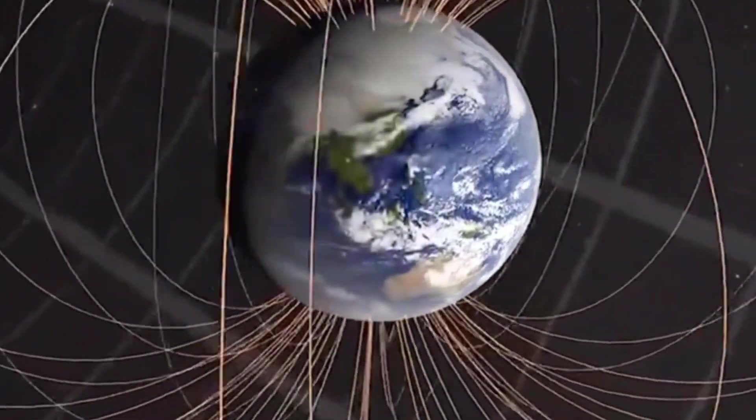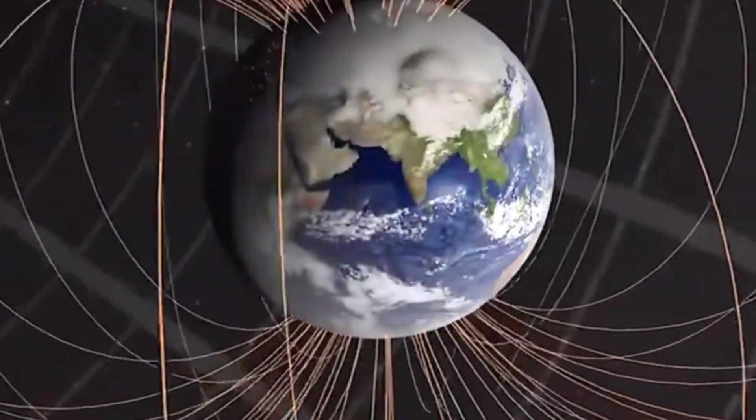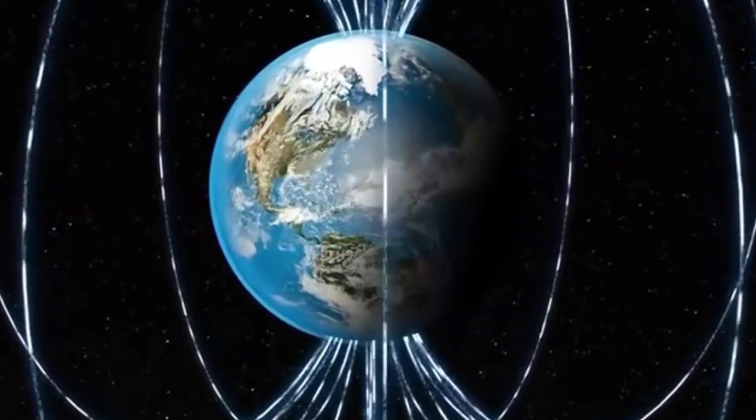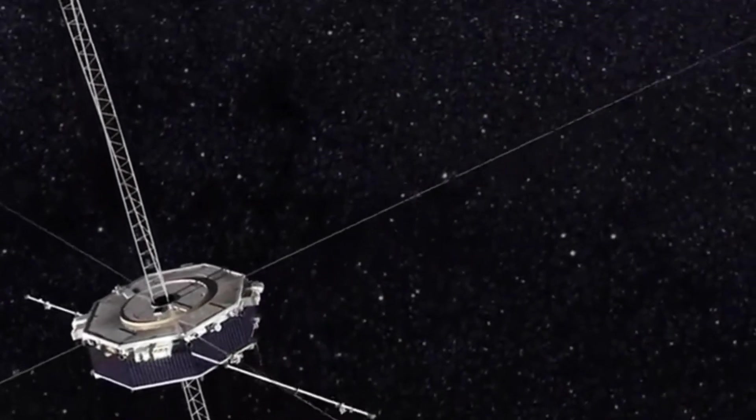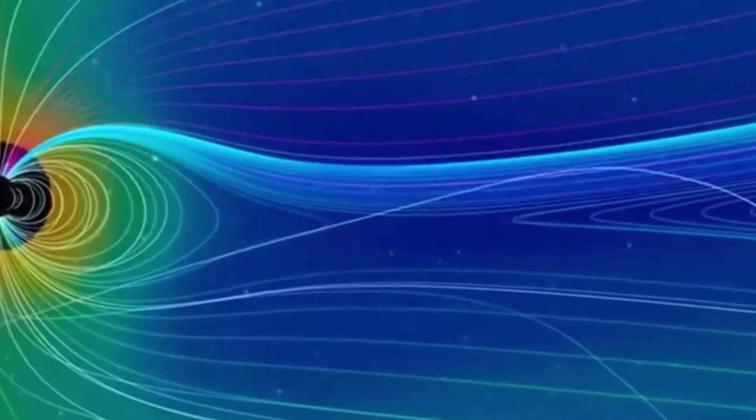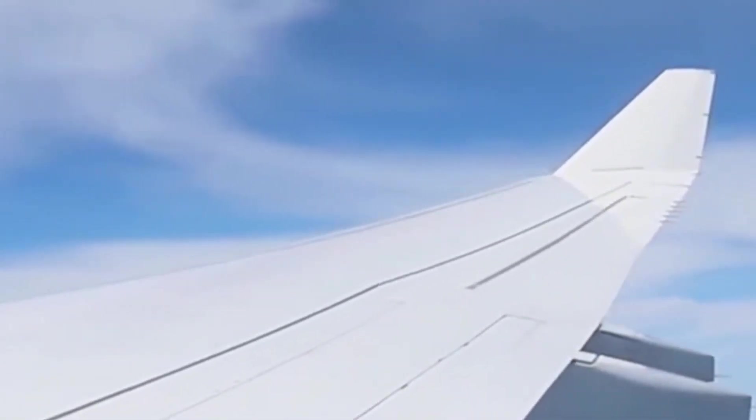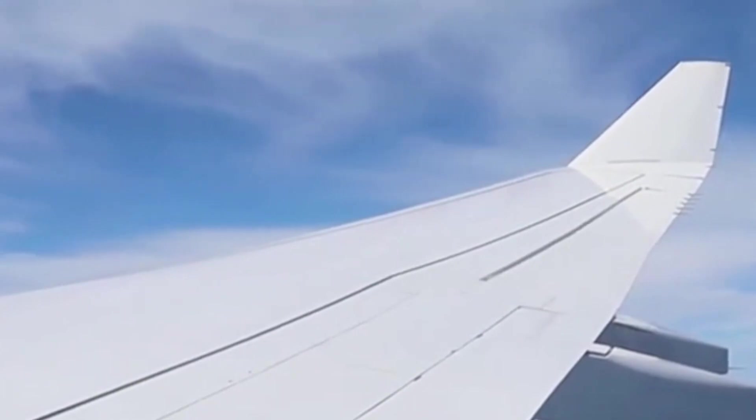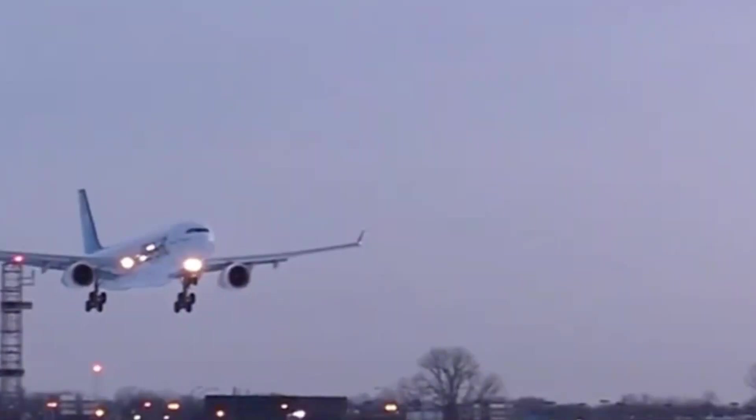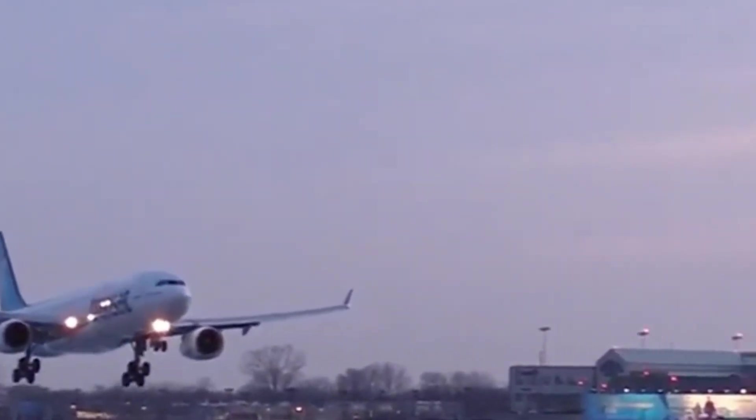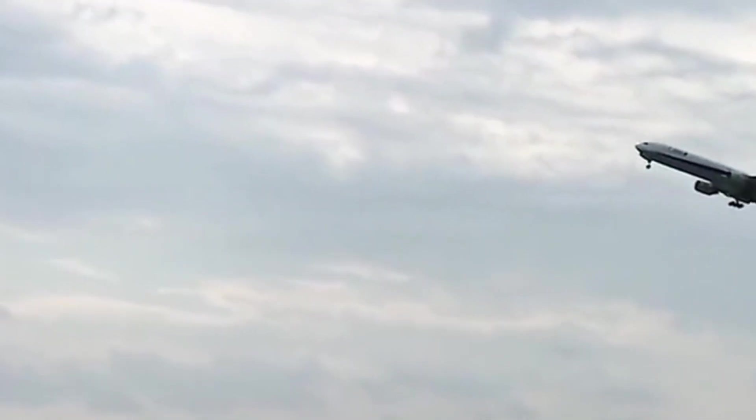And when it does happen, life on Earth will feel the consequences. What happens during a shift? Imagine waking up one morning and realizing that the compass in your phone is lying to you. North isn't north anymore. It points somewhere else entirely. For travelers, pilots, and explorers, navigation would suddenly become unreliable. Airports, which rely on precise magnetic data to align their runways, would face chaos. Entire flight paths would need to be recalculated, forcing airports around the globe to shut down temporarily just to adjust to the new reality.